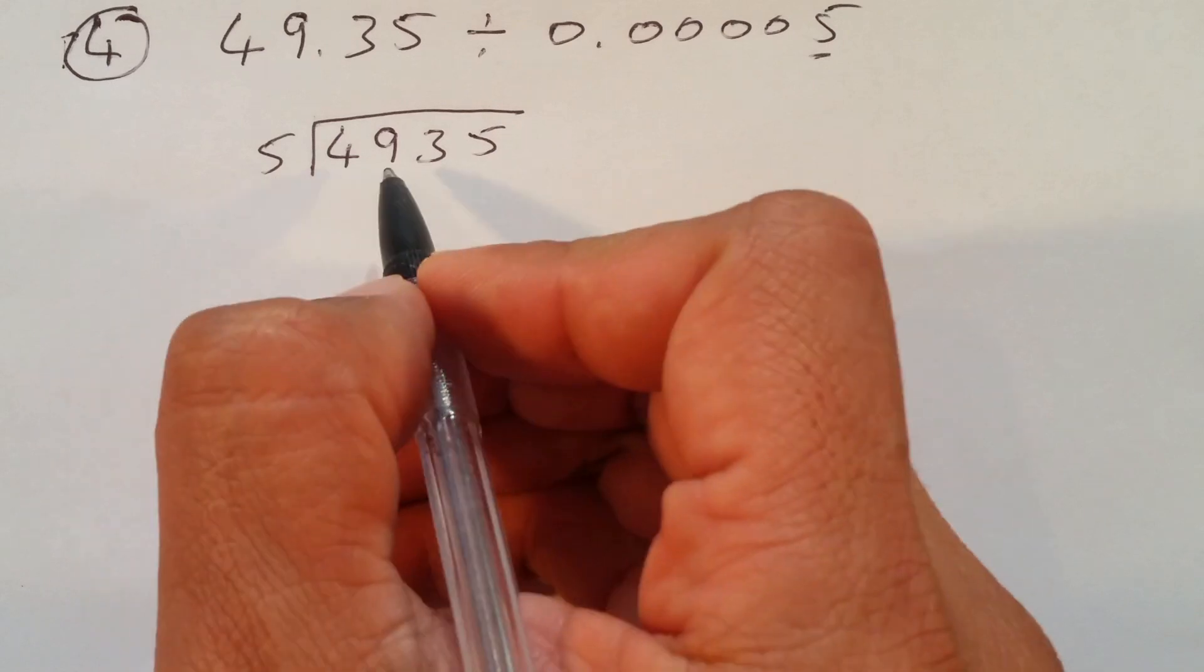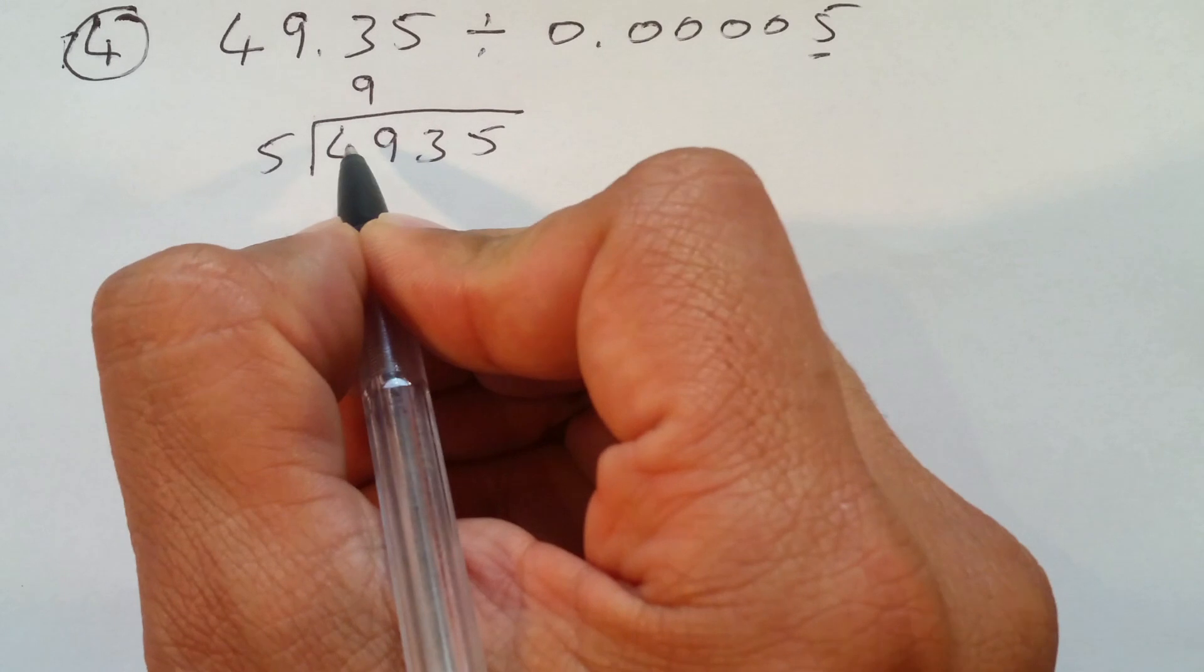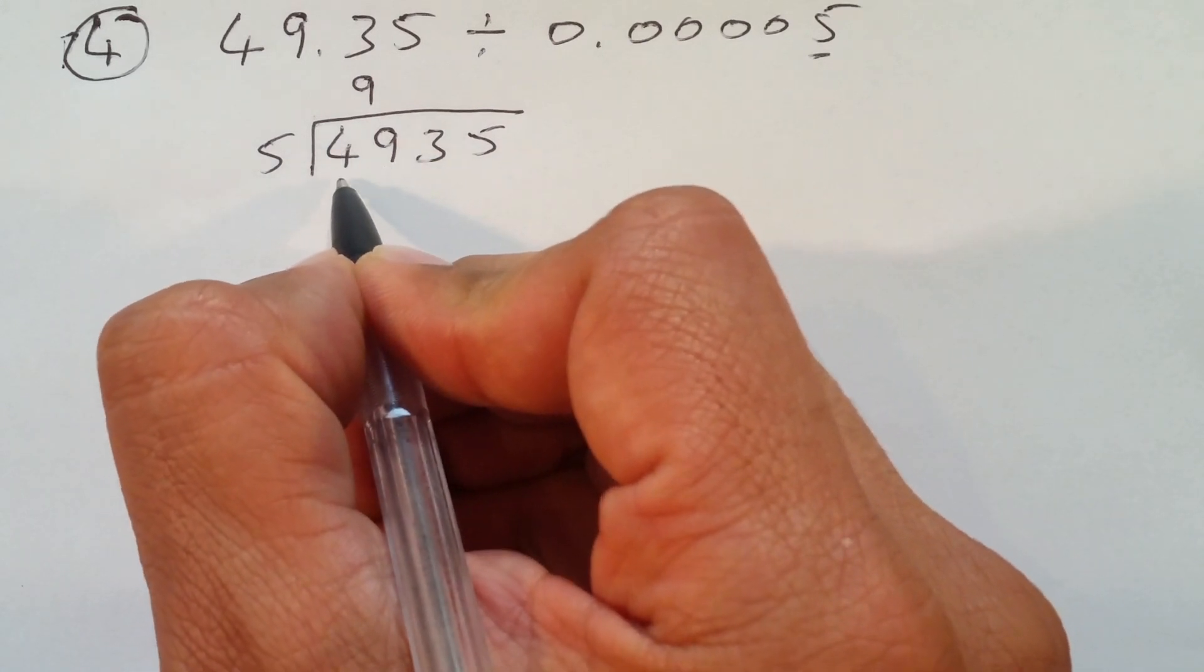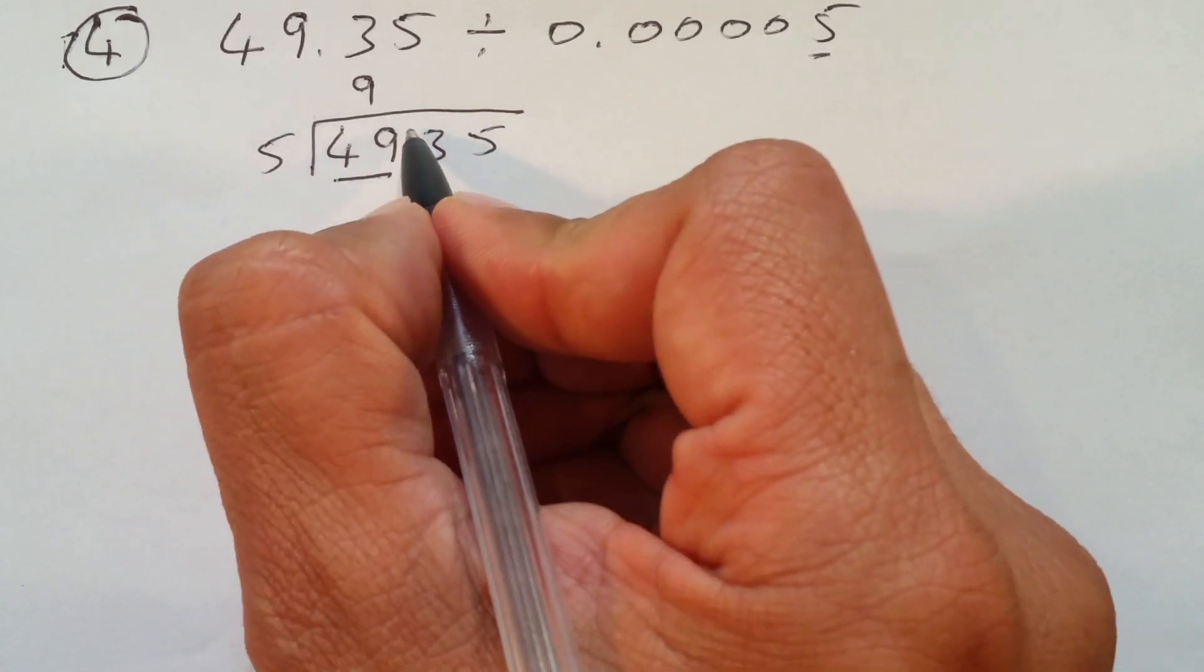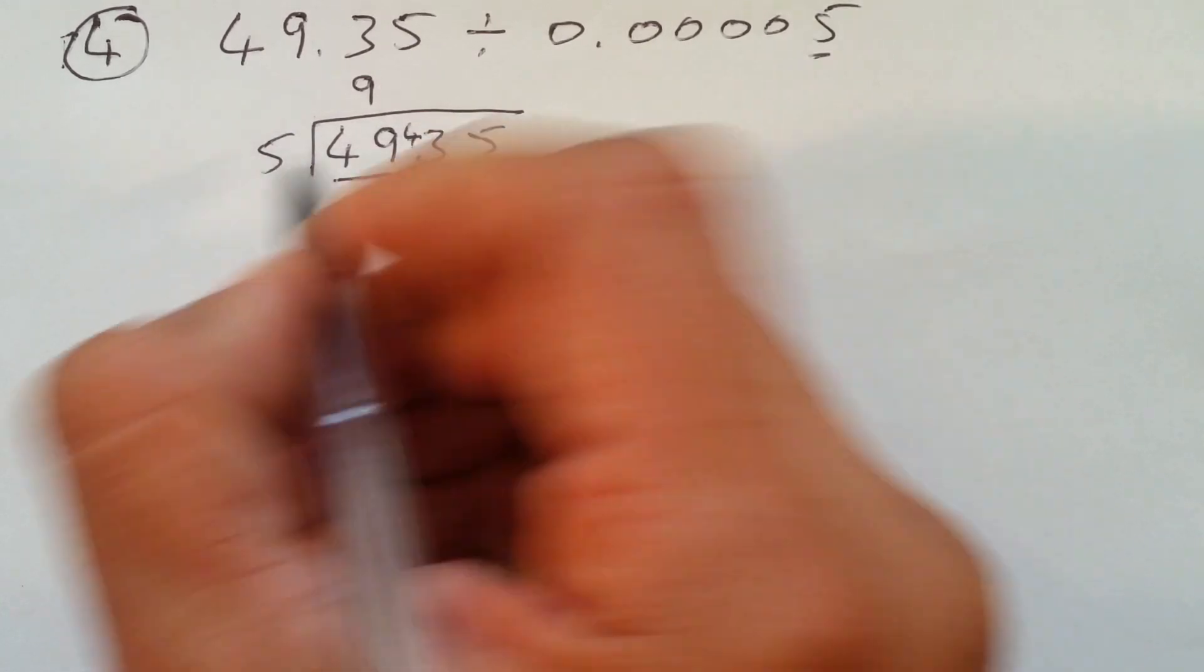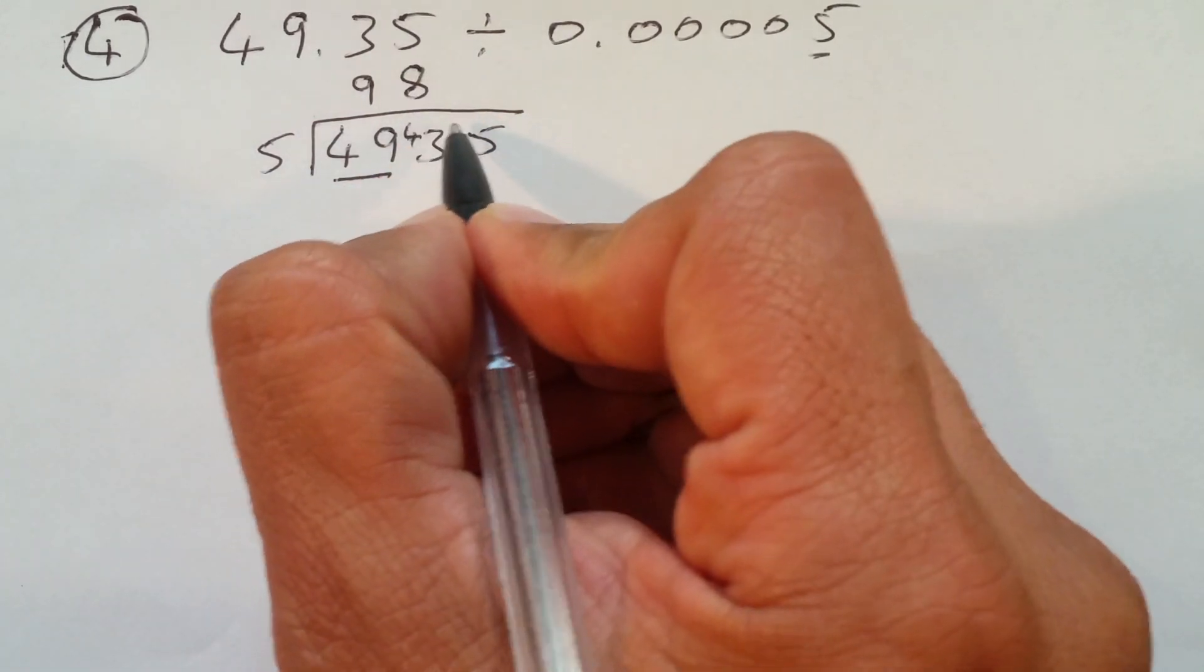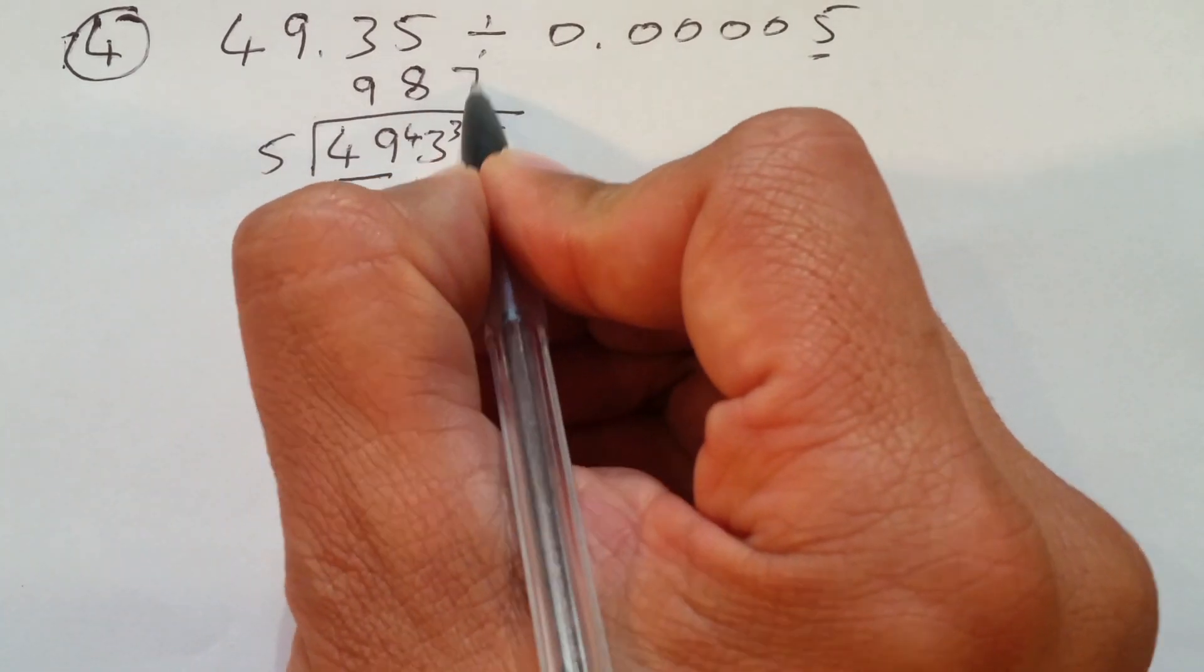So, read 5 table till you get 49. 5, 9, 45. And since the first number was a small number, that's why I took both. 5, 9, 45, remainder 4, 43. Now, read 5 table, 43, which is 8, which is 40, remainder 3. Read 5 table till you get 35, which is 7.